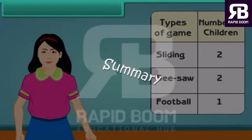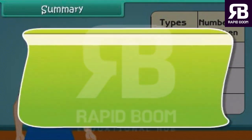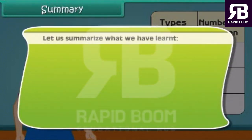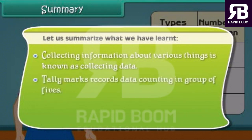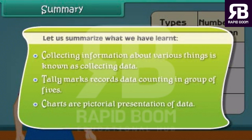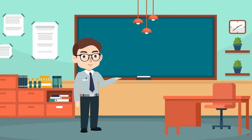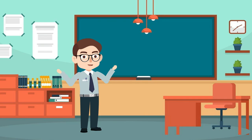Summary. Let us summarize what we have learnt. Collecting information about various things is known as collecting data. Tally marks record data counting in groups of fives. Charts are a pictorial presentation of data. Charts help us to interpret data. See you in the next video. Thank you and Jai Hind.